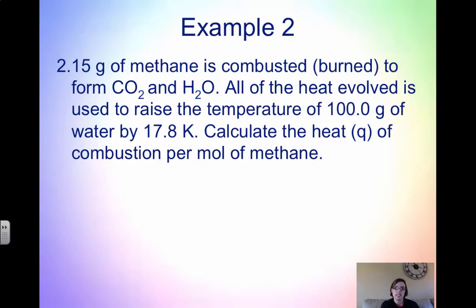So the second example says that 2.15 grams of methane is combusted to form CO2 and H2O. All of the heat evolved is used to raise the temperature of 100 grams of water by 17.8 Kelvin. Calculate the heat, which is Q, of combustion per mole of methane. So again, go through this problem and label everything that you know. So if we look, we have mass of methane, we have a mass of water, we have a delta T because it says that we're raising the temperature by 17.8 Kelvin. So we have a delta T and we're trying to find Q.